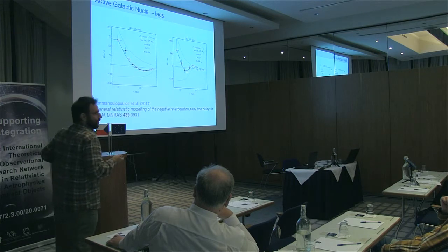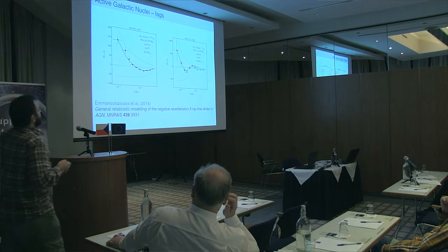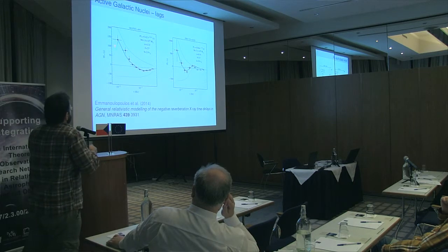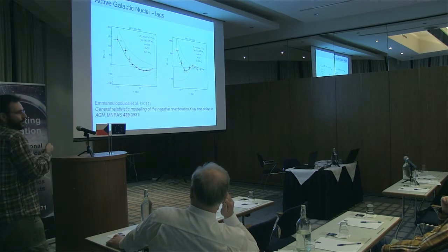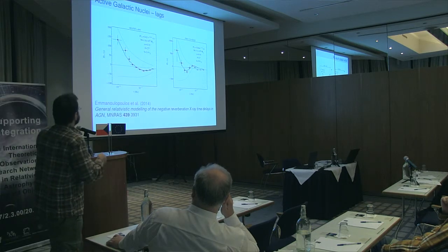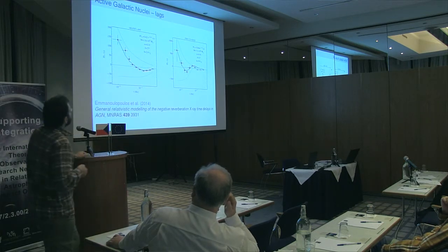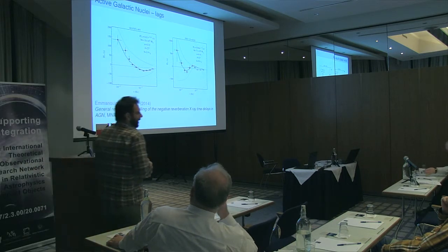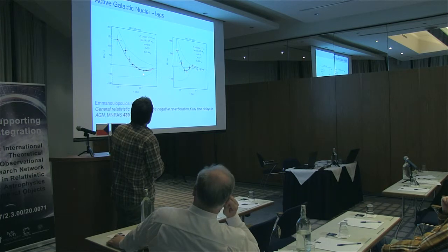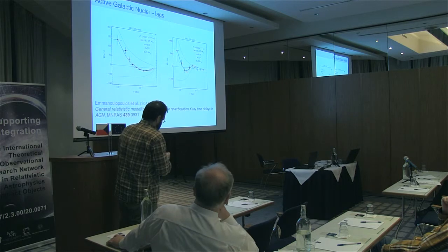So we have several components: the black hole, accretion disk, and corona. There are fluctuations coming down from the accretion disk to the corona and then from the corona to the reflection from the disk. In my talk I will be concerned with this reflection scenario and will be showing some results concerning these negative time lags.